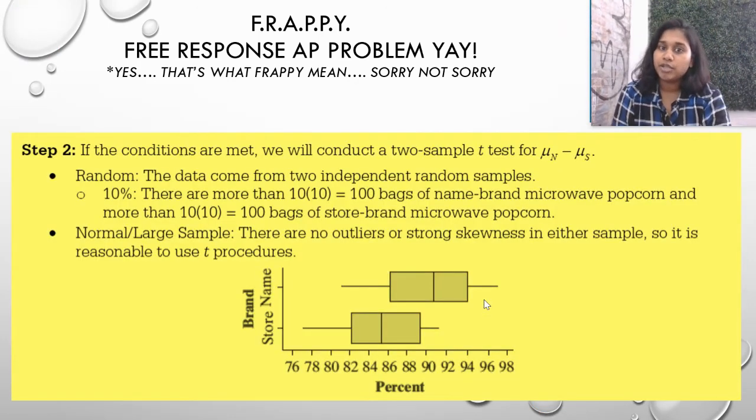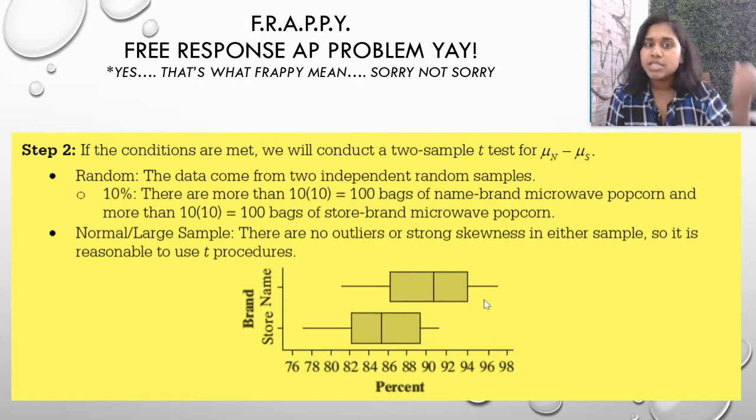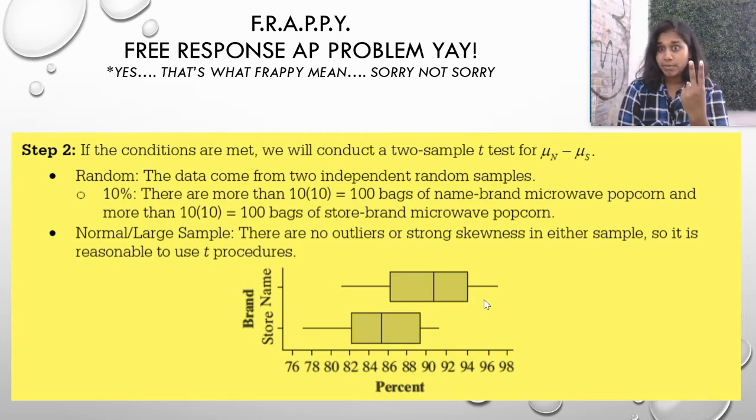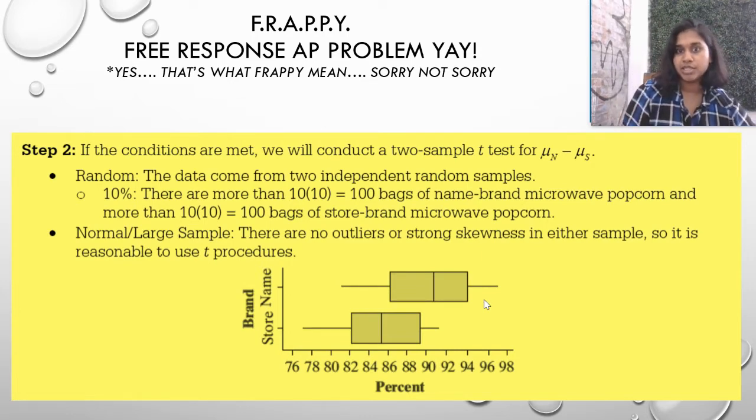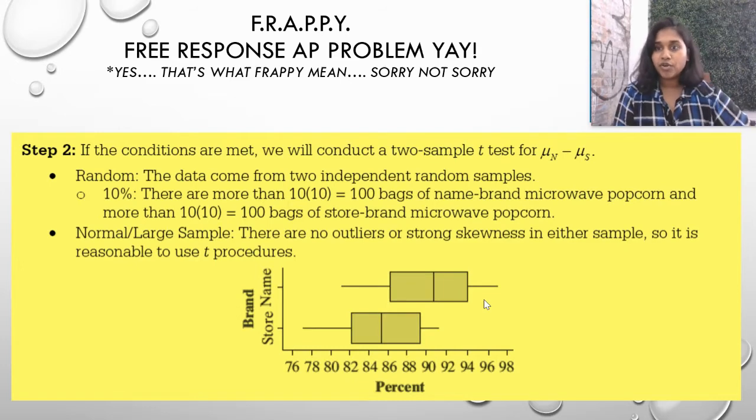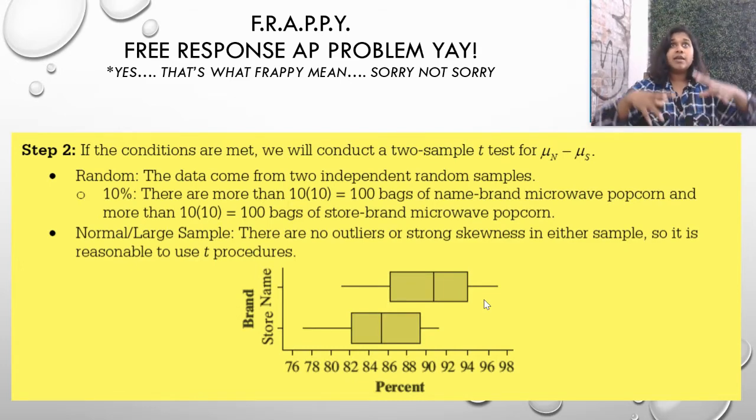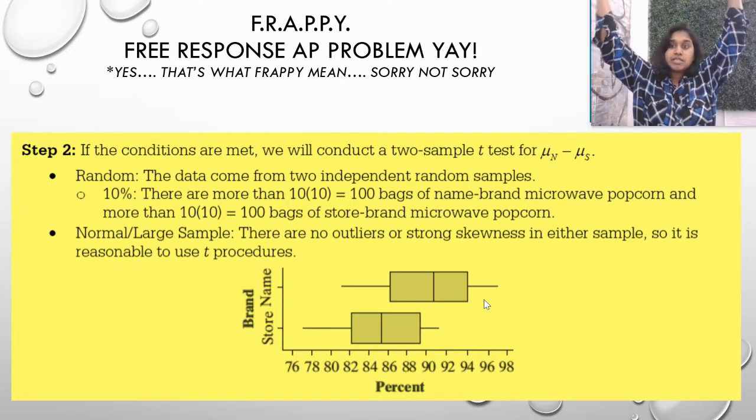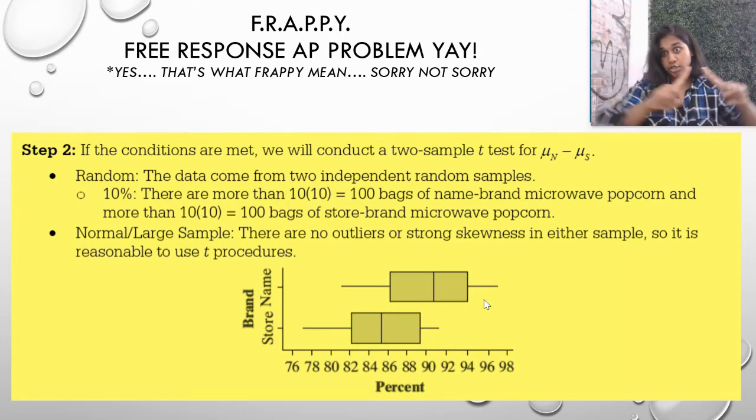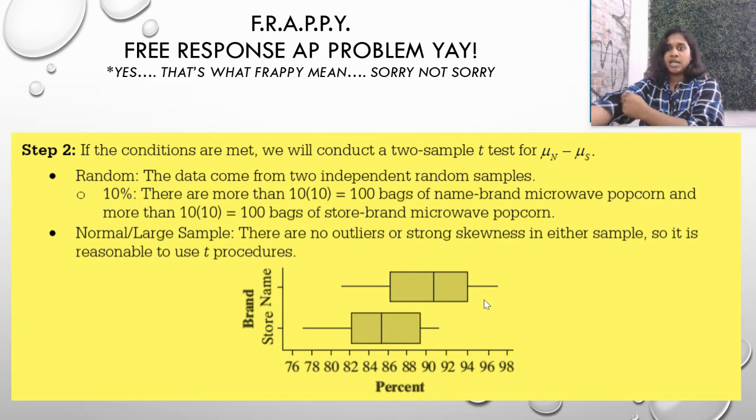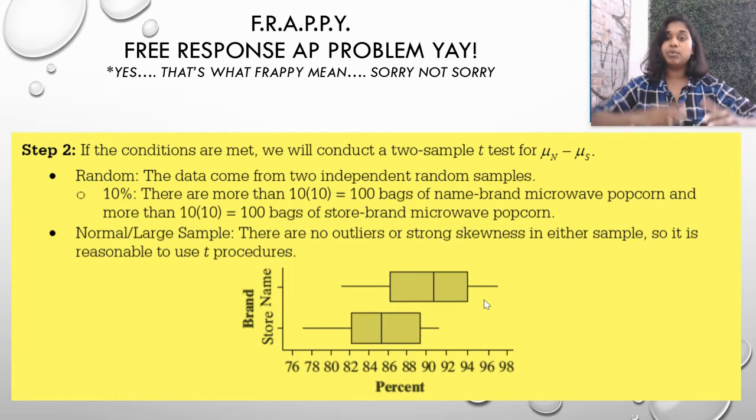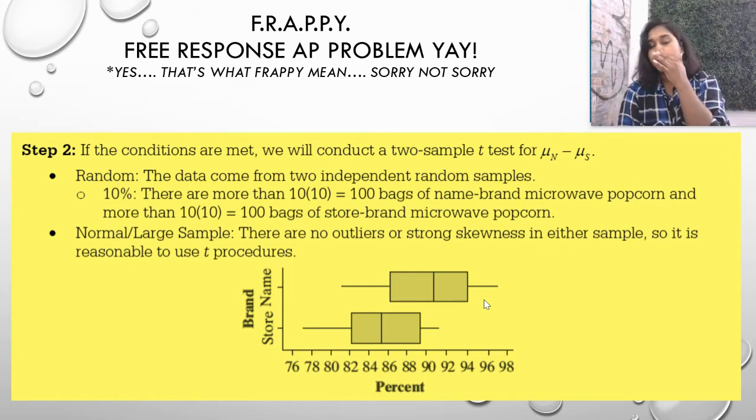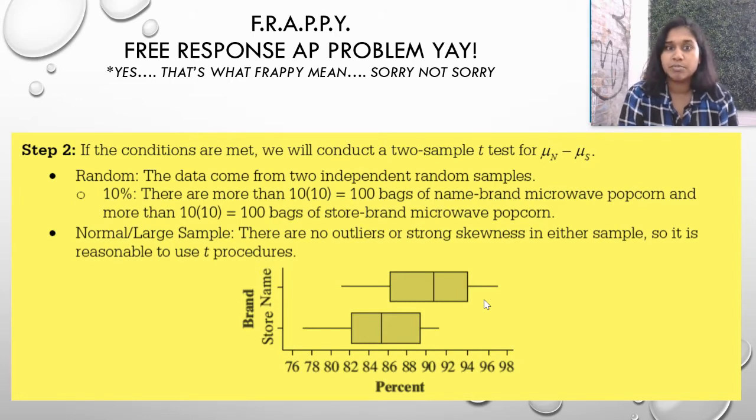Step two is plan. You check your conditions and you name that procedure. So our procedure is going to be a two-sample. We know that because we were given two samples. Because we're dealing with means and not proportions, we have to be even further away. If we're dealing with proportions, then we're dealing with multiple iterations dealing with probability. Because probability doesn't occur at one instance. It occurs because we've repeated it thousands of times. So when we're dealing with means, we have to allow for more errors. So we're going to do a two-sample t-test for mu N minus mu of S. You can't just put for mu because it's a comparison. So you have to put mu N minus mu S.